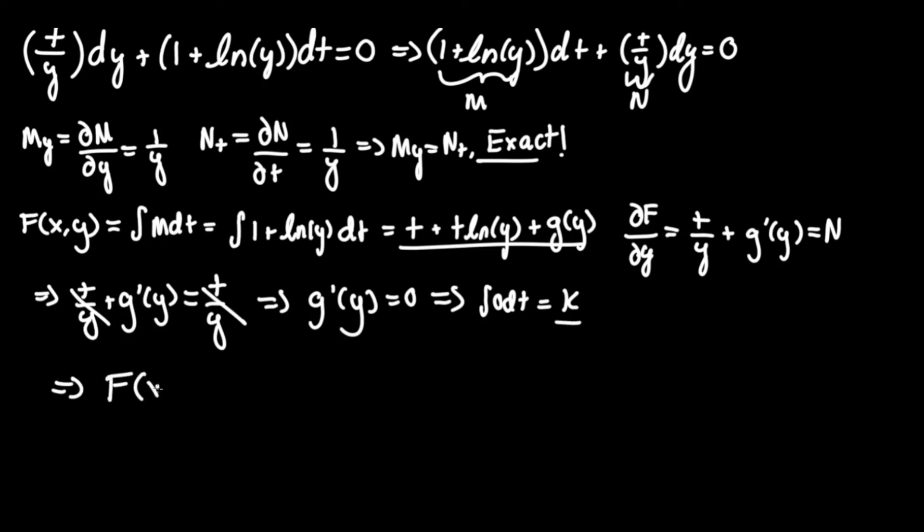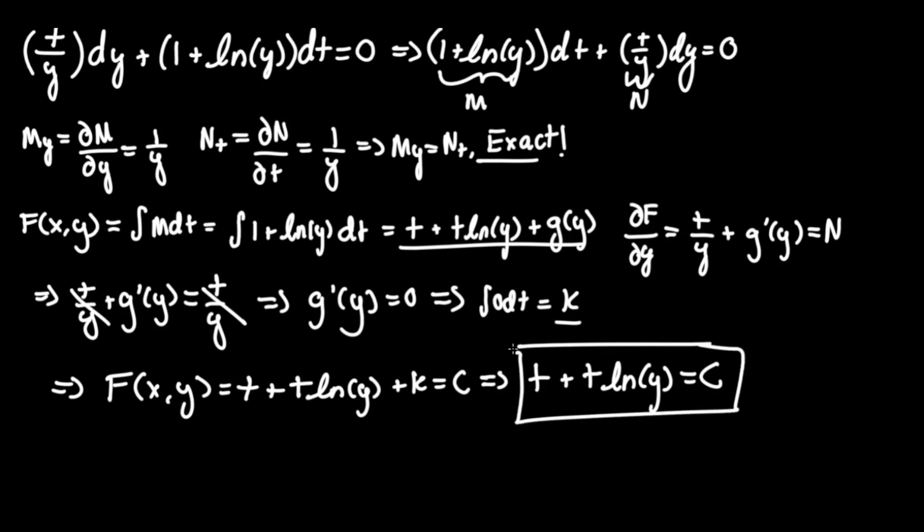So now we can find the general solution f of x comma y equals what we found up here t plus t ln y plus k equals c. This is not an initial value problem we are not given any points for this function therefore we can't figure out what c is. This is technically correct we can rewrite this and absorb the constant here onto the right side it becomes t plus t ln y equals c but this is a more proper way of writing it due to the fact that we don't want two constants to the left and right of each other. This is the most simplified form therefore the solution to this equation is t plus t ln y equals c.